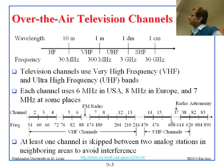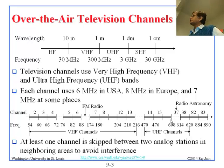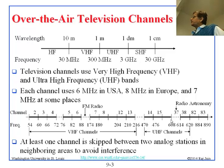In the channel numbering, there is a break after channel 4, then channel 5 starts at 76 MHz, and channel 7 is at 174 MHz and so on. Channel 37 is not assigned to any TV station because it is used for radio astronomy. Channels 5, 6, 7 through 13, 14, 15 are numbered sequentially. At least one channel must be skipped between two analog stations in the same area.